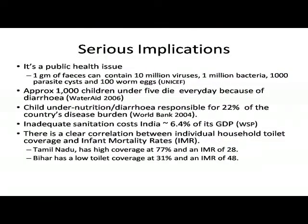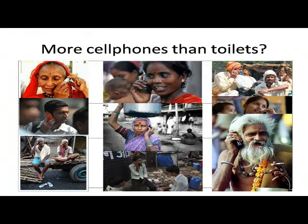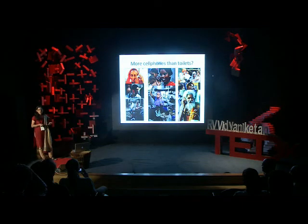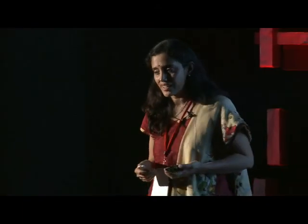Tamil Nadu, which has much higher toilet coverage, has a lower infant mortality rate compared to Bihar. There's enough studies to show what the current situation is. And there was one study that came out a year ago — many of you might remember it, it caused a huge amount of debate. We found that 59% of households in the country had access to cell phones, and only 49% had access to toilets. This brought a lot of attention to the situation of sanitation.